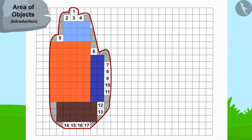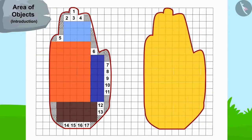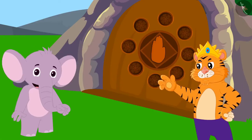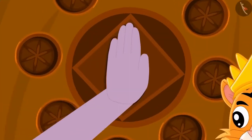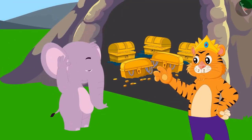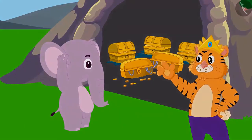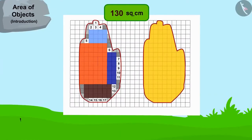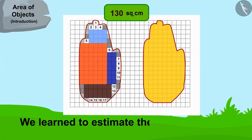Appu's hand impression matched the impression on the cave door. The king opened the door with Appu's help and gave him half of the treasure in return. Children, in this video we learned to estimate the area of objects.